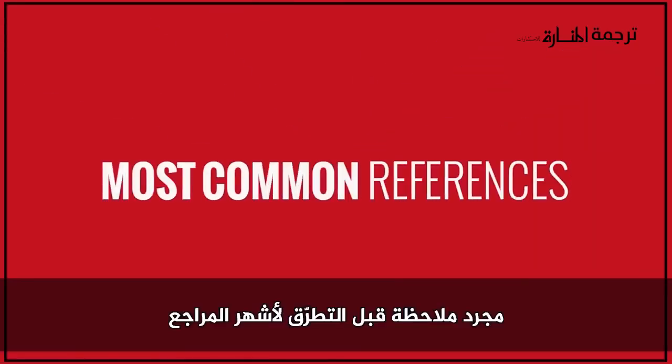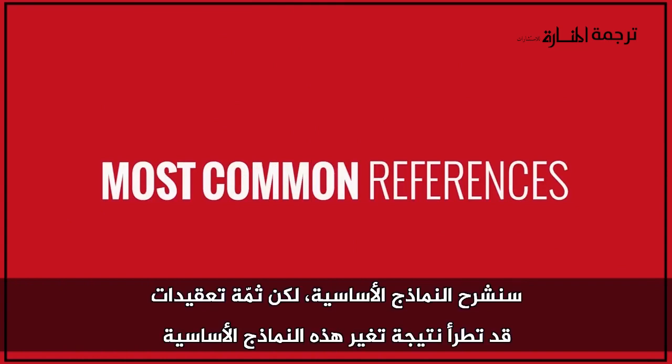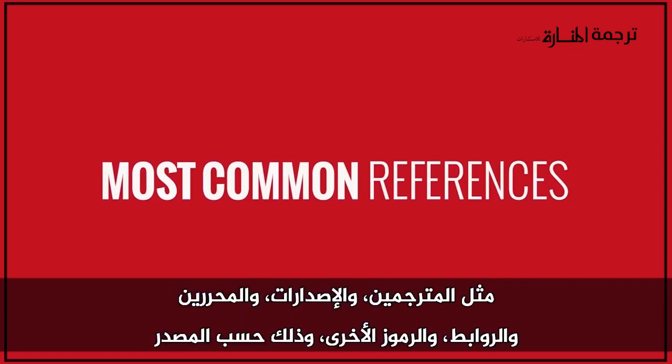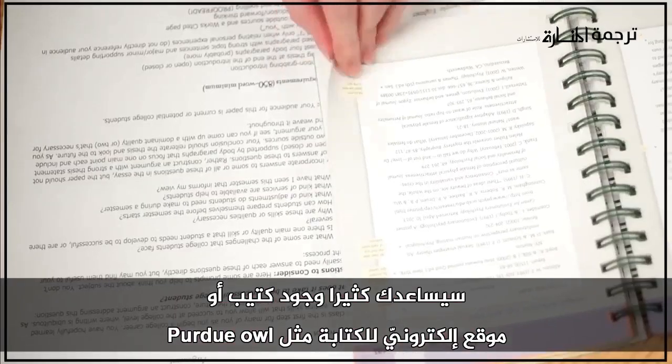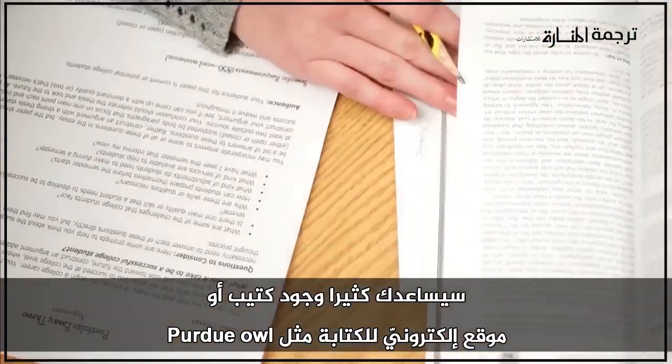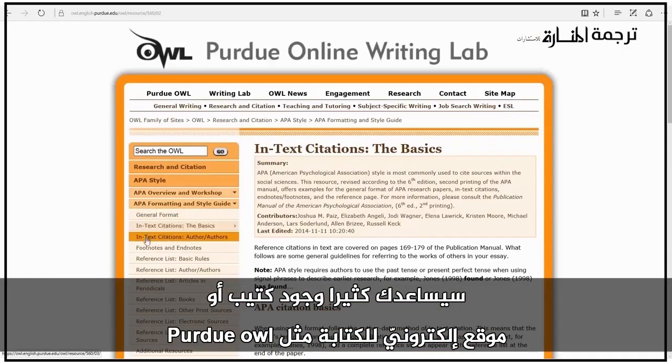Just a note before we get into the most common references: we will cover the basic models here, but there are a number of complications that can alter or add to these basic formats. Things like translators, editions, editors, URLs, and other notations may need to be added depending on the source. This is where having a handbook or a good reliable website like the Purdue OWL will come in very handy.